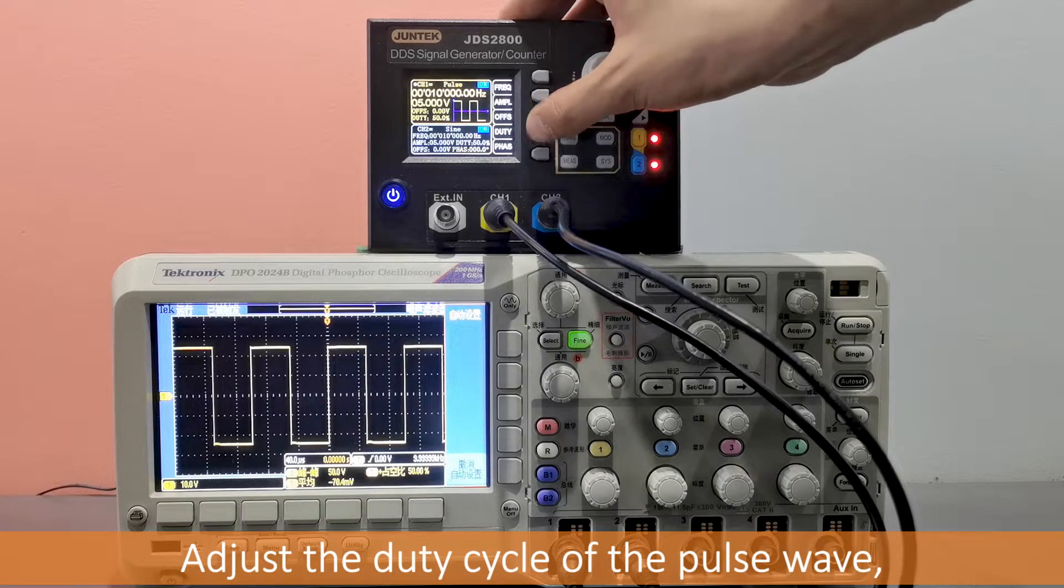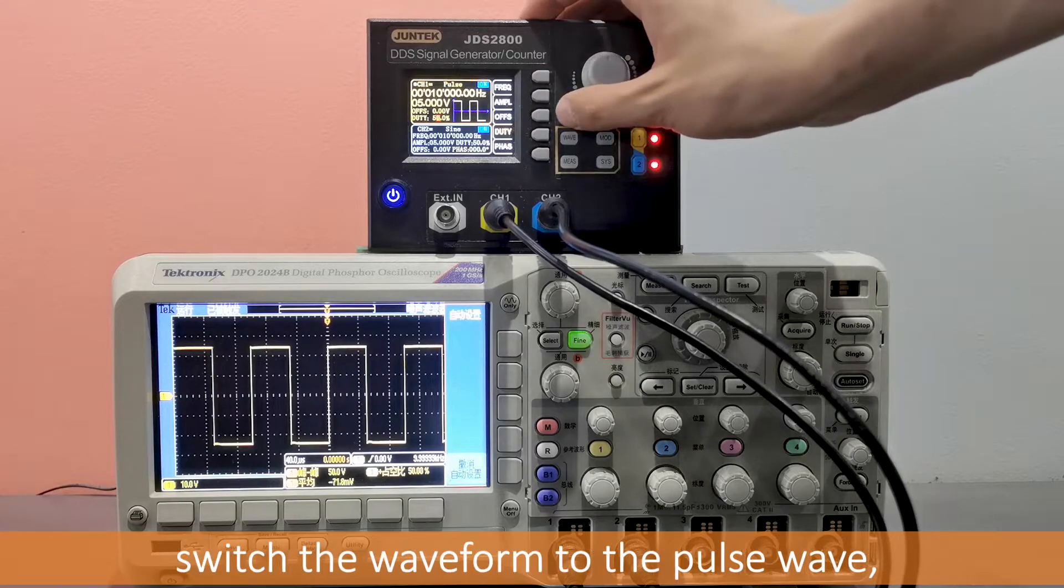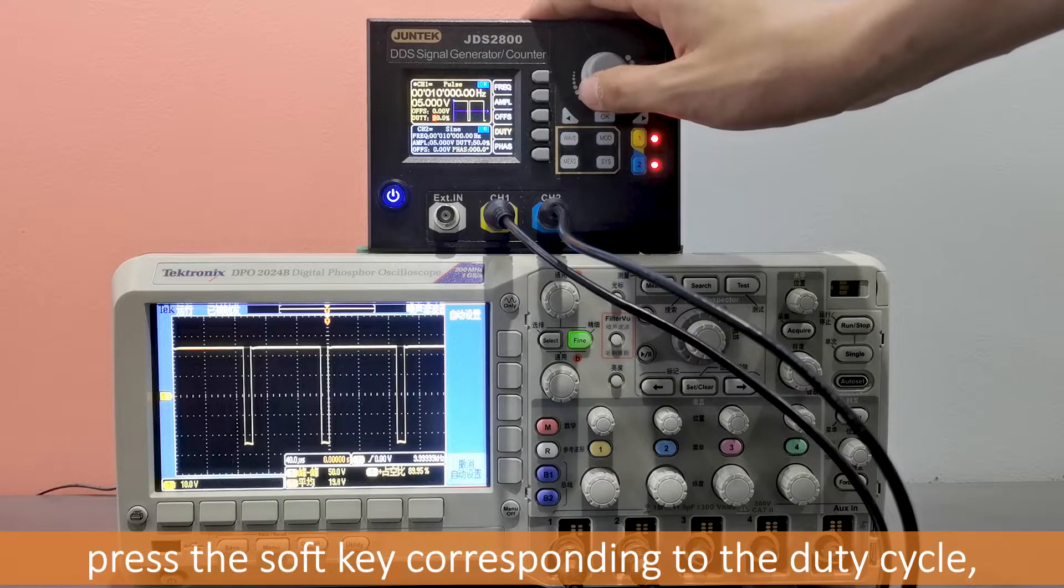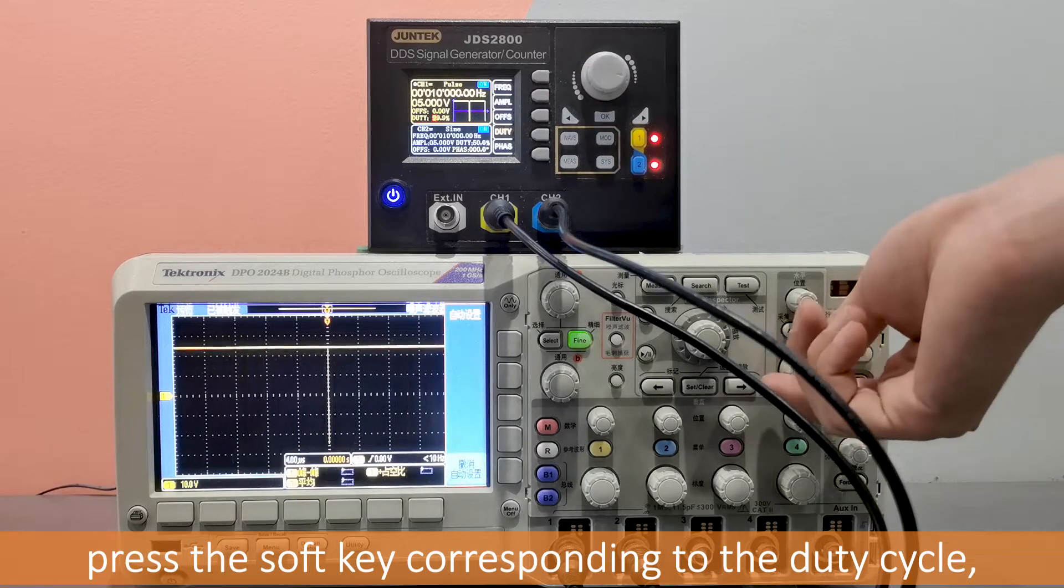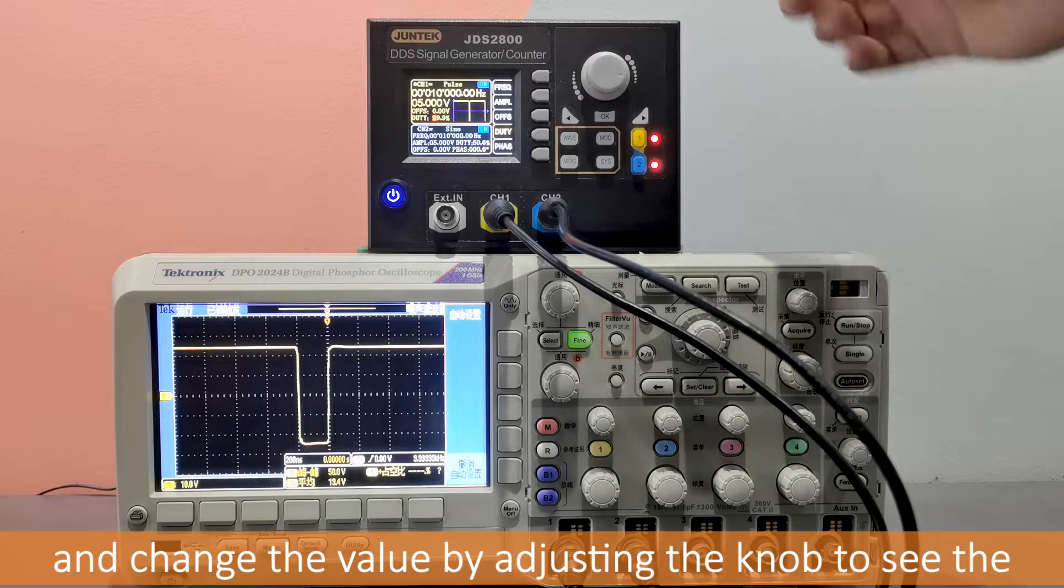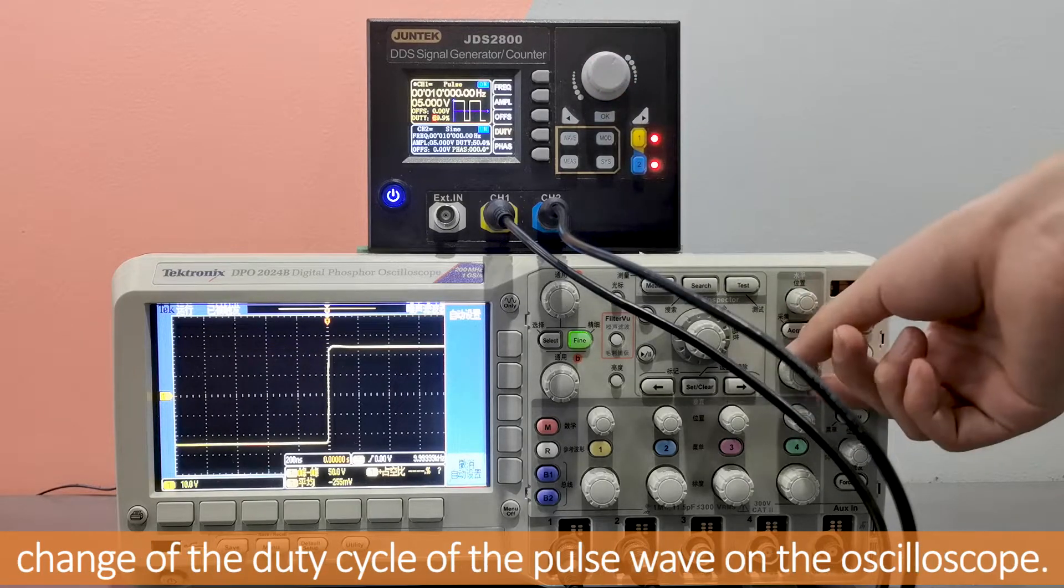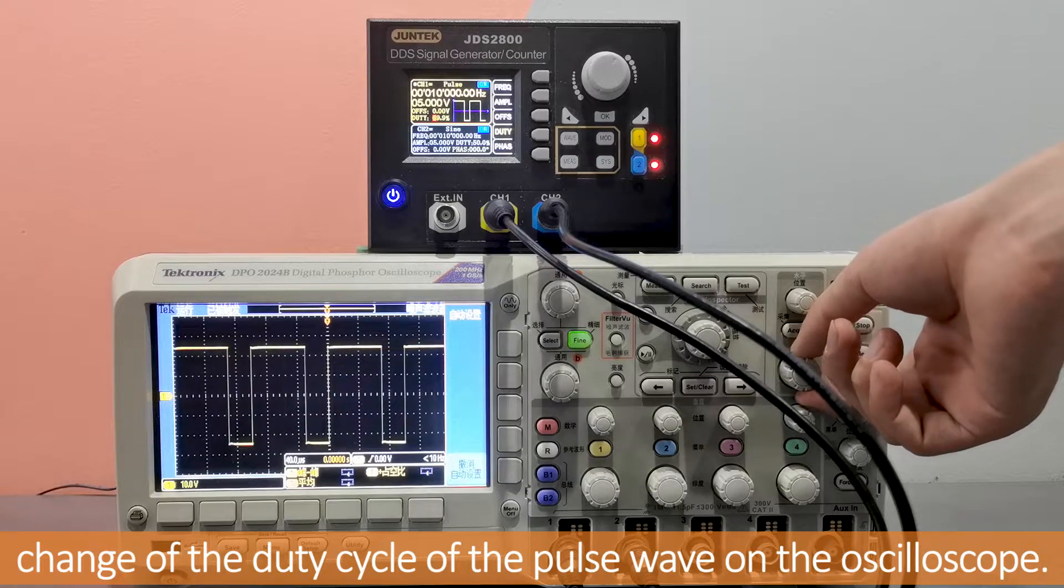Adjust the duty cycle of the pulse wave. Switch the waveform to the pulse wave, press the soft key corresponding to the duty cycle, and change the value by adjusting the knob to see the change of the duty cycle of the pulse wave on the oscilloscope.